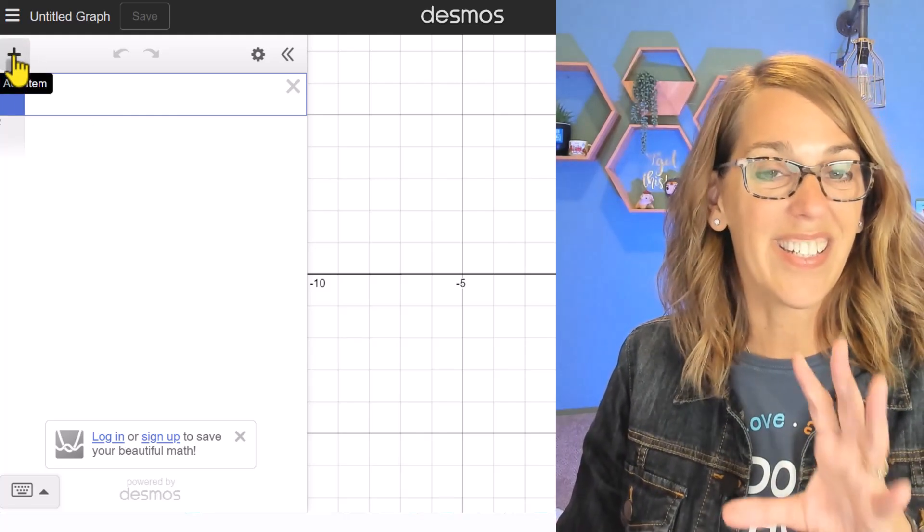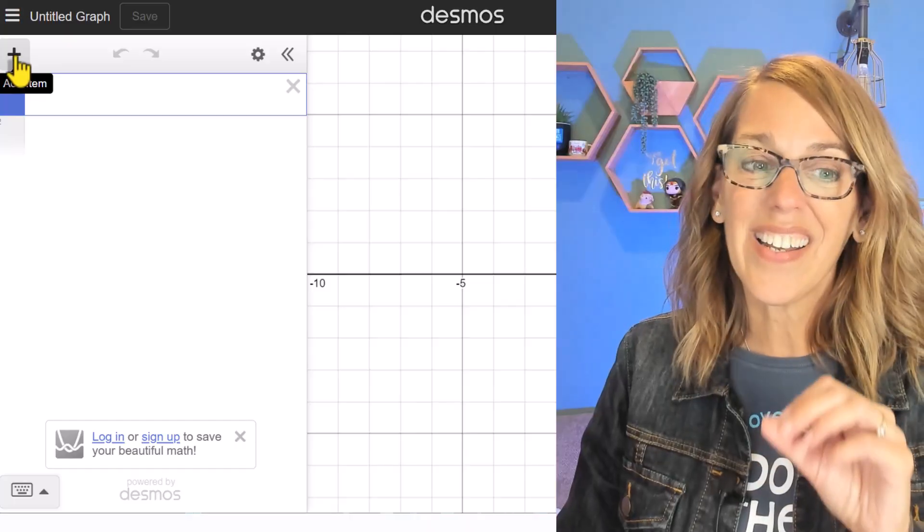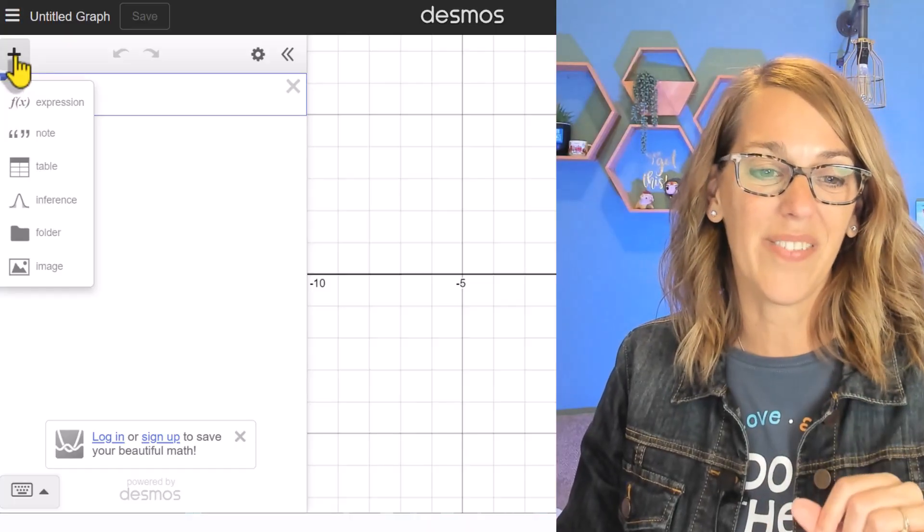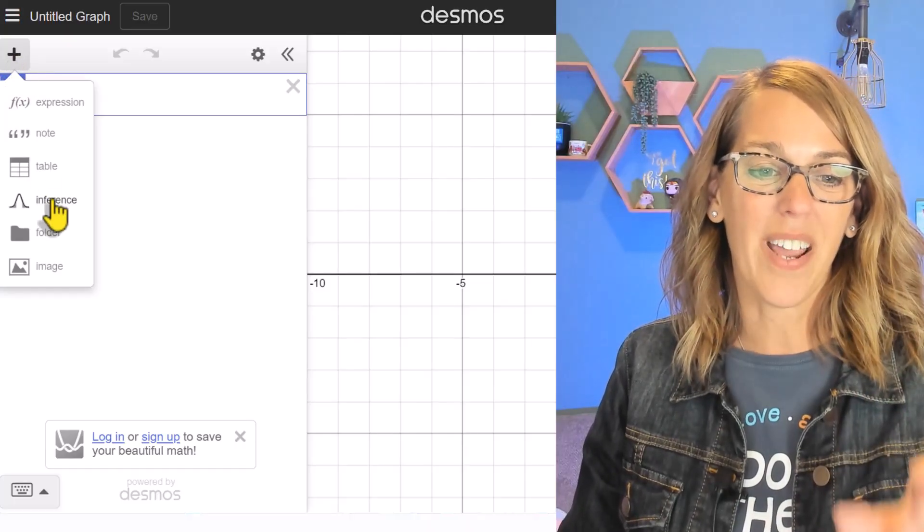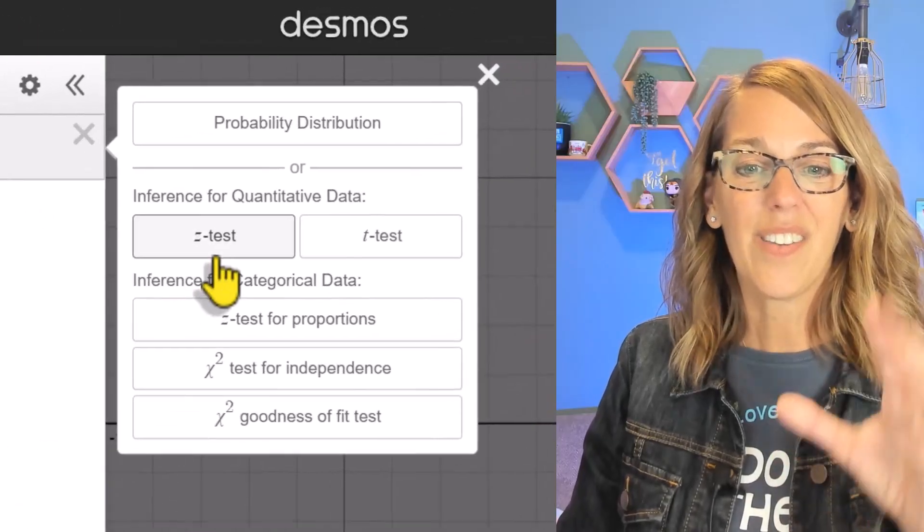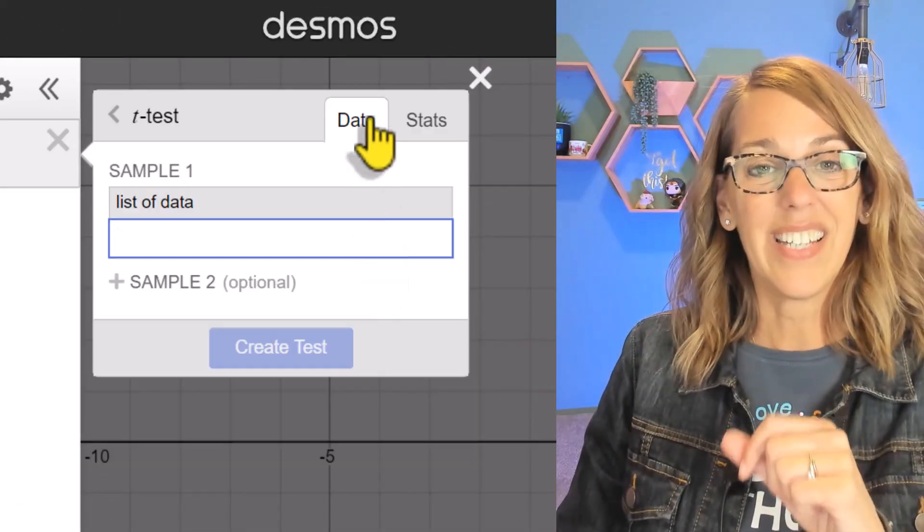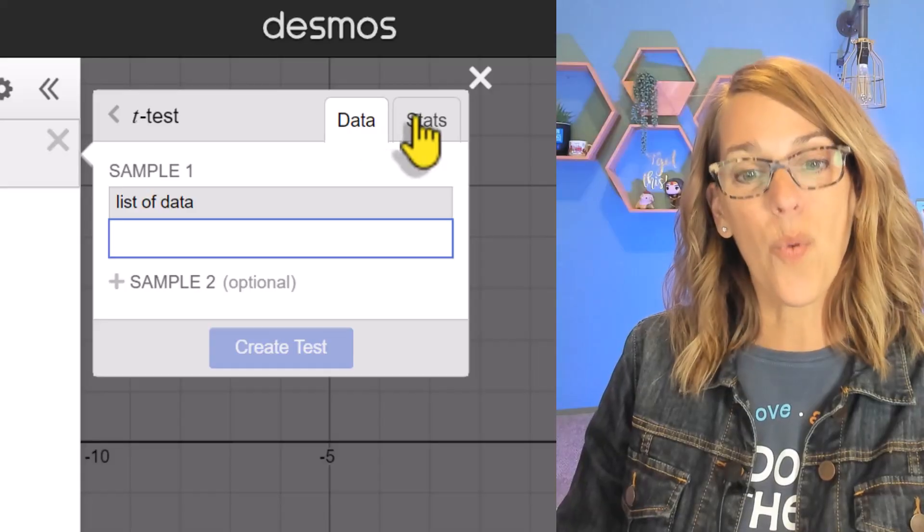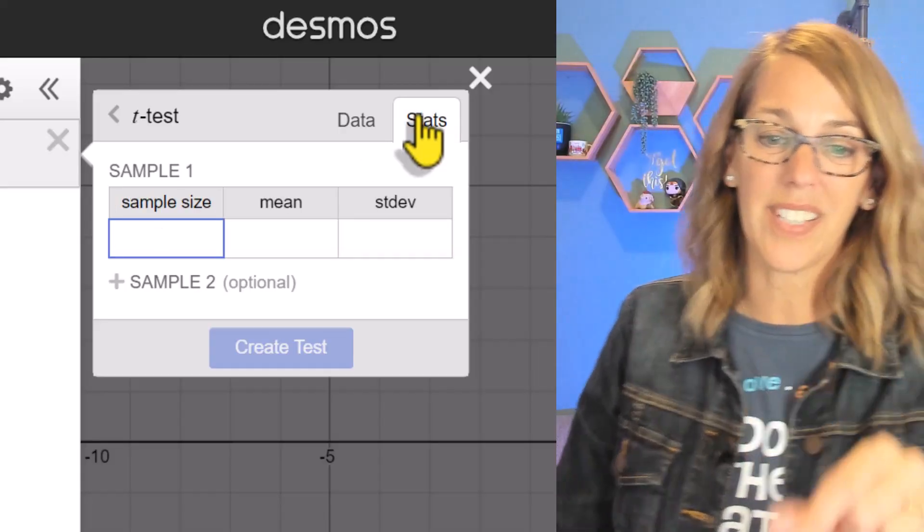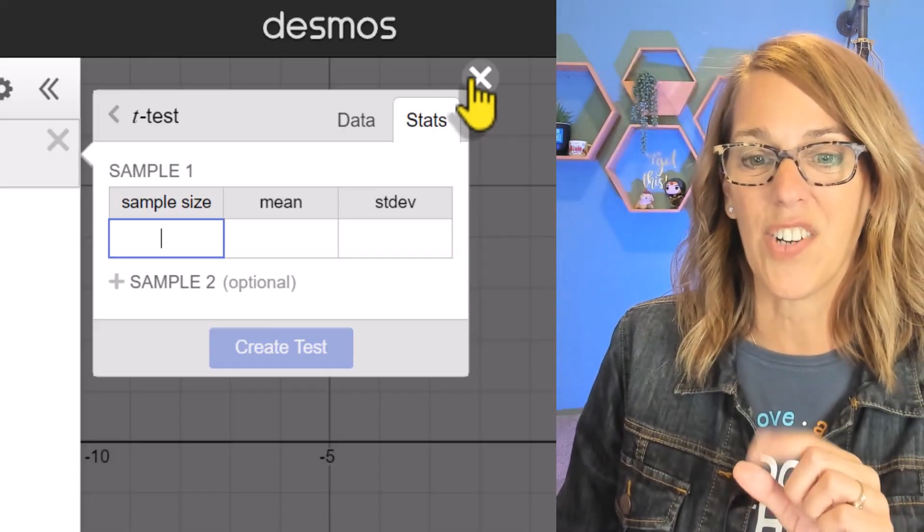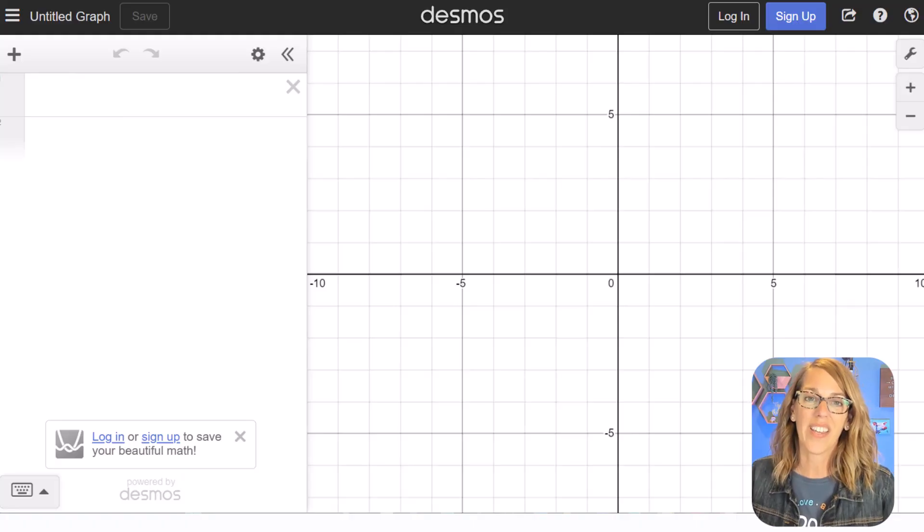So to run this inference, this statistical test, we're going to click on the plus button in this upper left and notice that it shows up right here under inference. It gives us several different options. We want to do that t-test, and that t-test either needs our data or it needs our sample size, mean, and standard deviation. Let me click the X and go get our data.